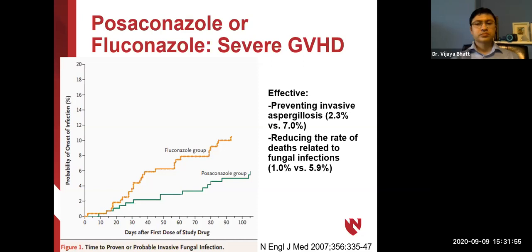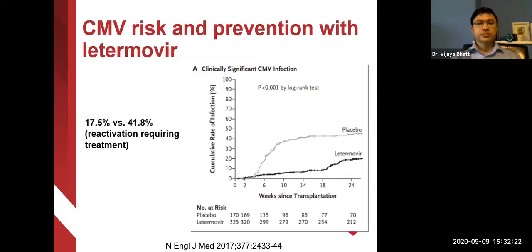Data shows that in highly immunocompromised patients on high-dose steroids for severe graft-versus-host disease, posaconazole is beneficial in preventing Aspergillus compared to fluconazole alone. Similarly, in high-risk CMV-positive recipients, letermovir demonstrates a reduced rate of CMV reactivation in the early post-transplant period compared to placebo or acyclovir prophylaxis alone.